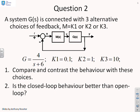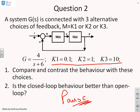Second question. A system g is connected with three alternative choices of feedback of k1, k2 and k3 and you can see the values here. What we want you to do is compare and contrast the behaviour with these three choices and then answer the question, is the closed loop behaviour better than the open loop? So now is the time to pause and for you to try this by yourself.